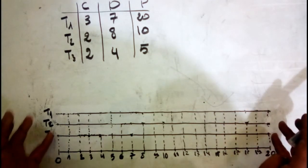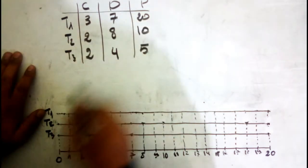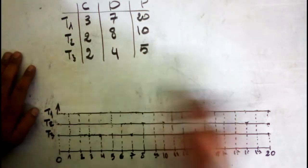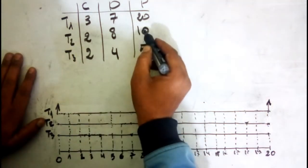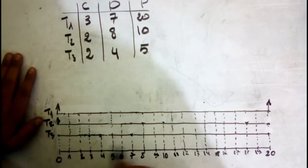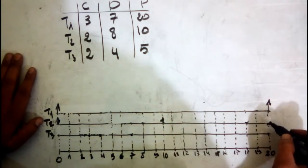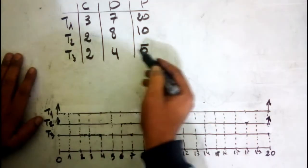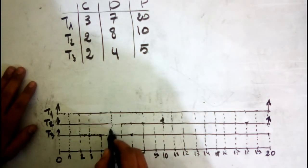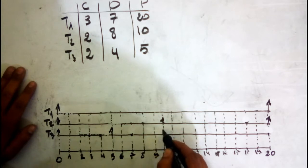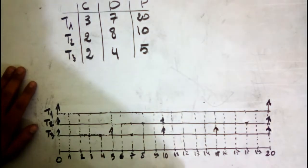For T1, the period is 20, so it starts from 0 to 20. For T2, the period is 10, so it starts from 0 to 10 and then restarts from 10 to 20. For T3, the period is 5, so it starts from 0 to 5, then 5 to 10, then 10 to 15, and from 15 to 20.